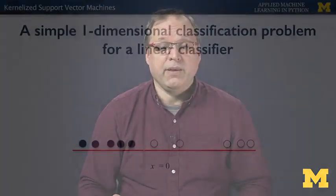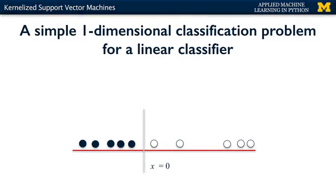In essence, one way to think about what kernelized SVMs do is that they take the original input data space and transform it to a new, higher-dimensional feature space, where it becomes much easier to classify the transformed data using a linear classifier. Here's a simple one-dimensional example of what I mean. Here's a binary classification problem in one dimension with a set of points that lie along the x-axis, colored black for one class and white for the second class. Each data point here has just one feature, its position on the x-axis.